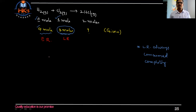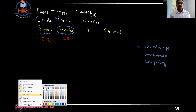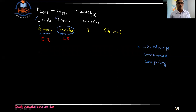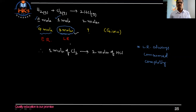As stated, all stoichiometric calculations must be done with respect to the limiting reagent only. As per stoichiometry, one mole of Cl₂ produces two moles of HCl. Since three moles of Cl₂ is consumed completely, three moles of Cl₂ should produce six moles of HCl.